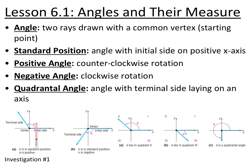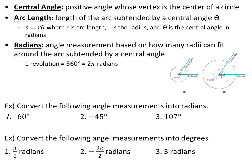A positive angle rotates in the counterclockwise direction, whereas a negative angle rotates in the clockwise direction. A quadrantal angle is an angle whose terminal side ends on one of the axes. A central angle is a positive angle whose vertex is at the center of a circle, and the part of the circumference subtended by that central angle is called arc length.